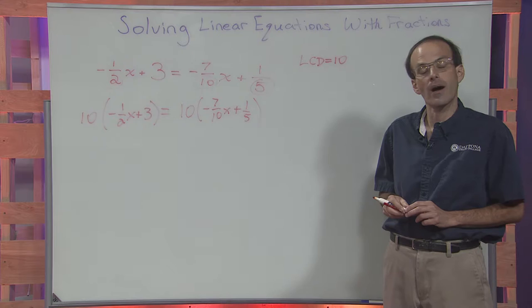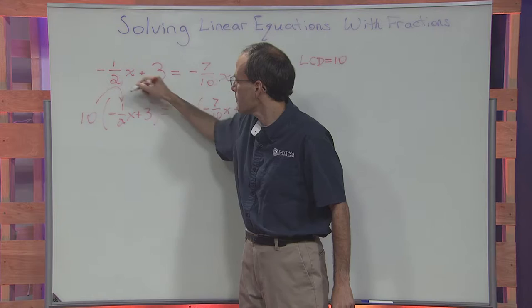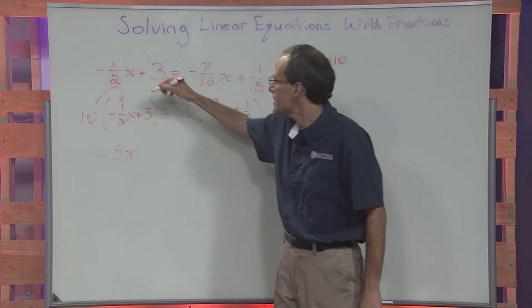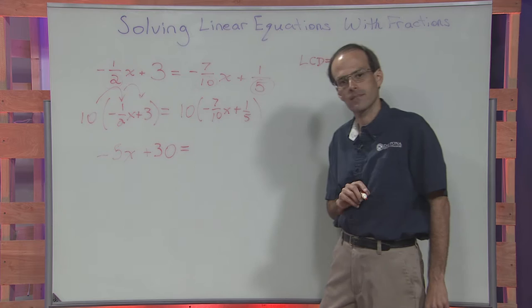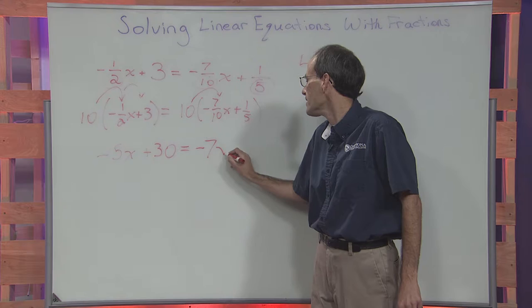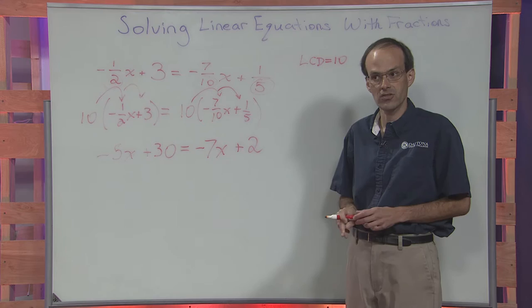We then distribute that ten throughout both sets of parentheses to clear the fractions. Ten multiplied by negative one-half x yields negative five x. Ten multiplied by three is positive thirty. Ten multiplied by negative seven-tenths x is negative seven x. And finally, ten multiplied by one-fifth is positive two.